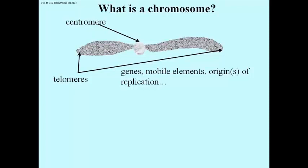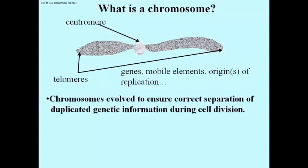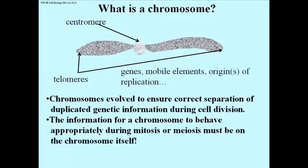So there are different kinds of genetic information within a chromosome. Chromosomes evolve to ensure correct separation of the duplicated genetic information produced during S phase in the life of a cell, and this information is going to be partitioned during mitosis, or during cell division. The information for a chromosome to behave appropriately during mitosis, or during meiosis, must lie on the chromosome itself.